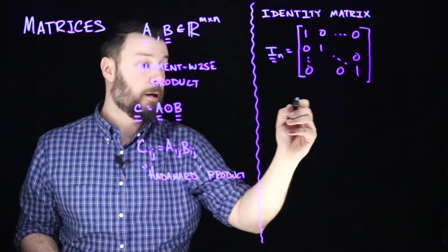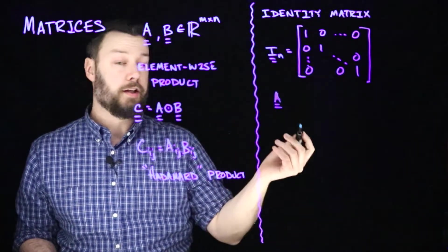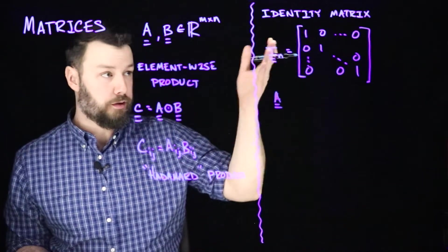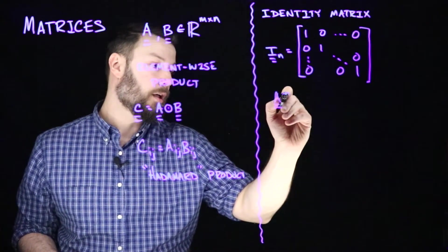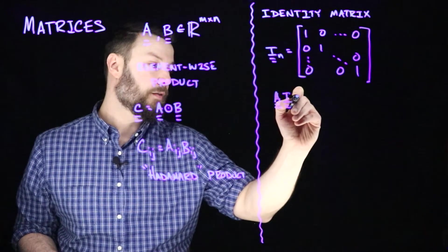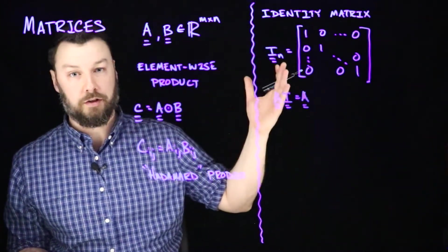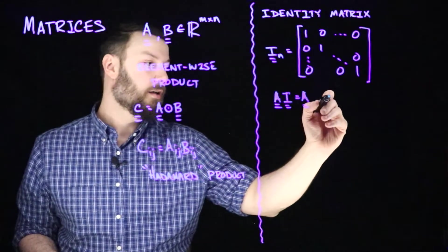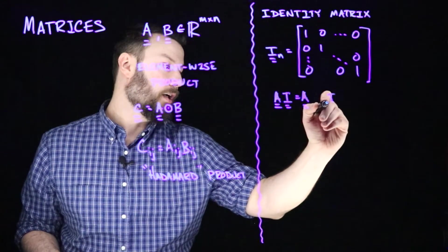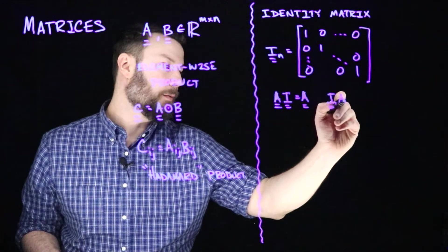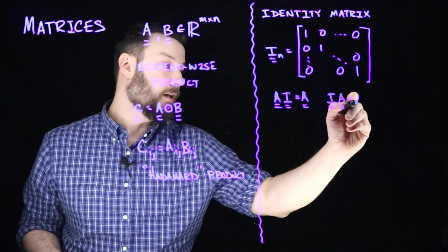And this is a matrix that has ones along the diagonal and then zeros everywhere else. And it has the property that if I take some matrix A that's compatible with the dimension of the identity matrix and I multiply it by identity, then I just get A back. And this is also true, subject to dimension compatibility, that if I pre-multiply I by matrix A, then I get A back.